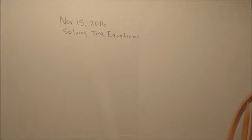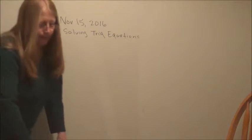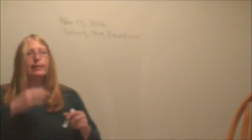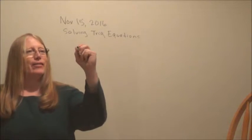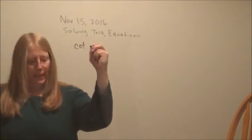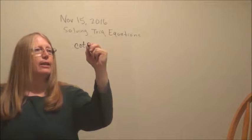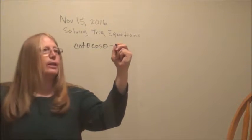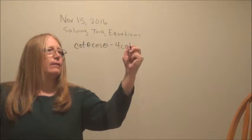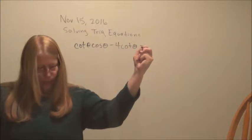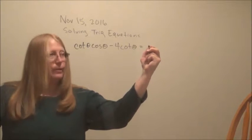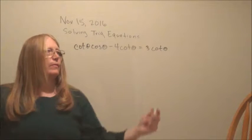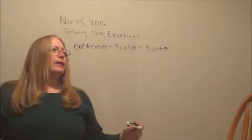Okay, here we go with part two. I have a trig equation to do. Surprise, surprise. Write it down with me: 3 cotangent theta cosine theta minus 4 cotangent theta equals minus 3 cotangent theta. Alright, so get this one ready to go.